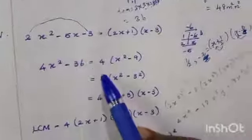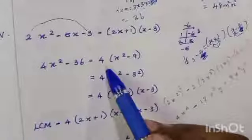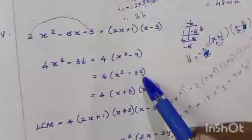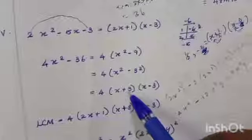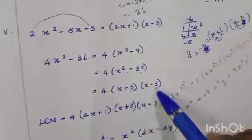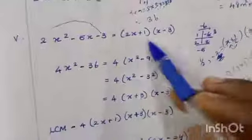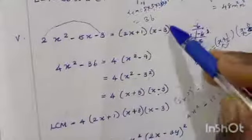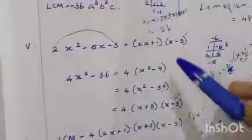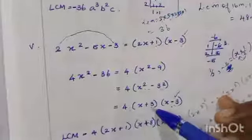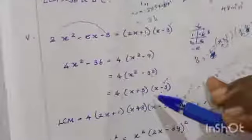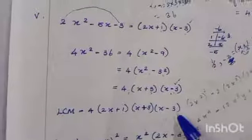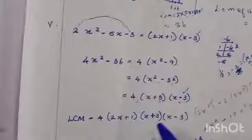Compare the factors: (2x+1)(x-3) and 4(x+3)(x-3). The common factor is (x-3). The independent factors are (2x+1), 4, and (x+3). Therefore, LCM = 4(2x+1)(x+3)(x-3).